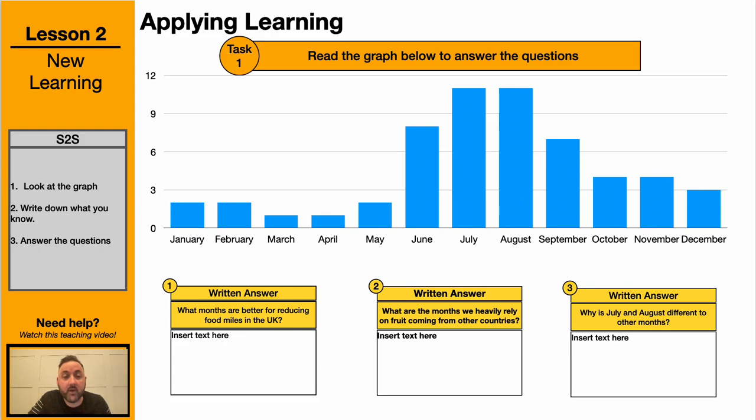One question is, what months are better for reducing food miles in the UK? What are the months we heavily rely on coming from other countries, and why is July and August different to the other months that are shown in the graph?